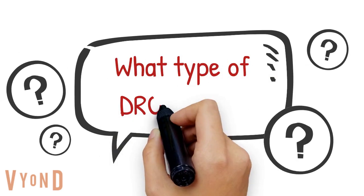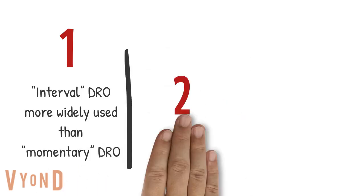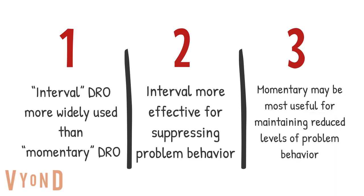Which type of DRO should one use? Here are some guidelines. It really depends on the individual and the behavior. Interval DRO is more commonly used than momentary DRO because it requires the behavior be omitted for the whole interval. Interval DRO is more effective for suppressing problem behavior — for example, reducing self-stimulatory behavior or self-injury — and you would reinforce them for the absence of that behavior.